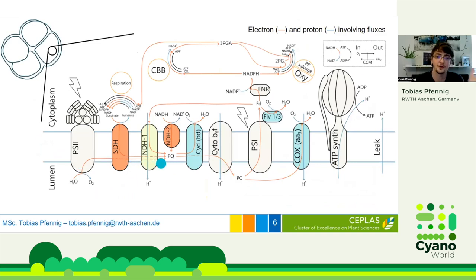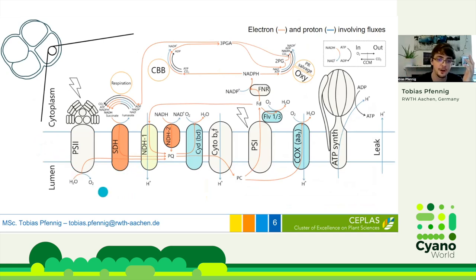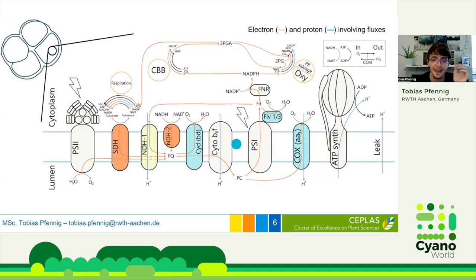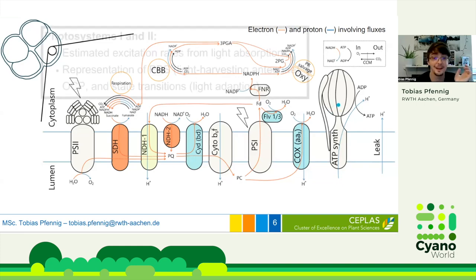This is an overview of the processes in the model. All of the orange arrows are reactions involving electrons, blue are protons. These are the main reactions implemented according to literature. Each compound and each reaction is described in mathematical terms. For each reaction, we have kinetic rate equations that tell us how fast a certain reaction is going at a particular time point, depending on compound concentration. If a certain important reaction is missing, we would really like to know.